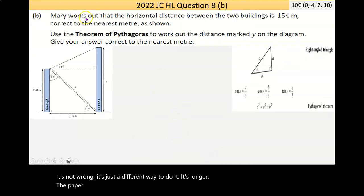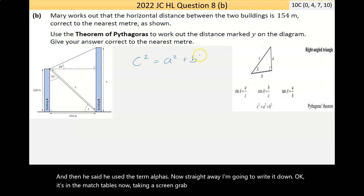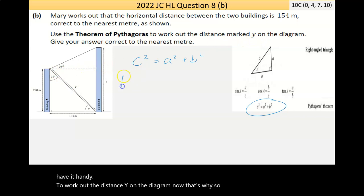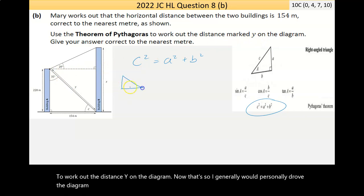Now, part B here says, Mary works out the horizontal distance between the two buildings is 154 meters, correct to the nearest meter as shown. And they said, use the theorem of Pythagoras. Now, straight away, I'm going to write it down. It's in the math tables. Taking a screen grab of that just for the notes down here, just so we have it handy. To work out the distance y on the diagram.